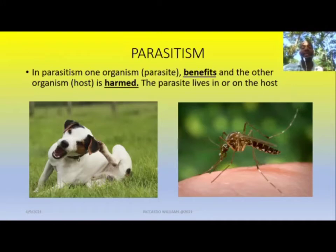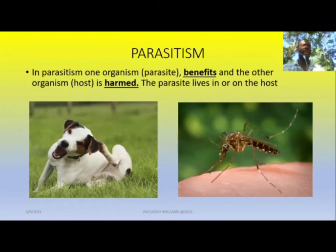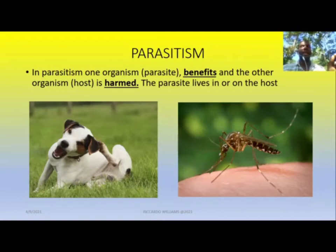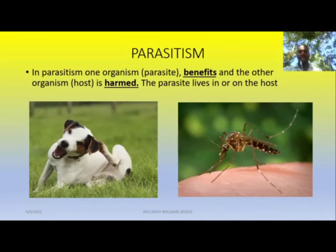Now let's move to the third and final type: parasitism. In parasitism, one organism — which we call a parasite — benefits, and the other organism — which we call the host — is harmed or suffers from the relationship. The parasite lives in or on the host. Those living on the outside are called ectoparasites, and those living inside the host are called endoparasites. Note those two prefixes: 'ecto' meaning on or outside the organism, and 'endo' meaning inside the host.